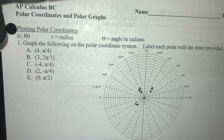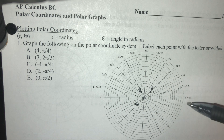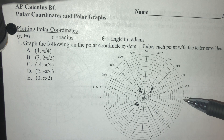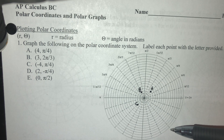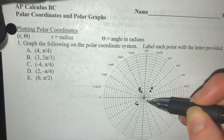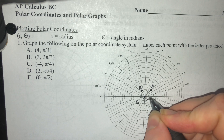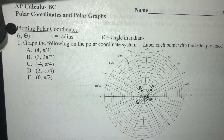Point D is at (2, -pi/4). A negative angle is measured clockwise, so it's midway through the fourth quadrant. The radius is 2, so we go out 1, 2 from the center. Point E is at (0, pi/2). If the radius is 0, I don't count out from the pole at all — it wouldn't matter what angle followed. So point E is just sitting on the pole.